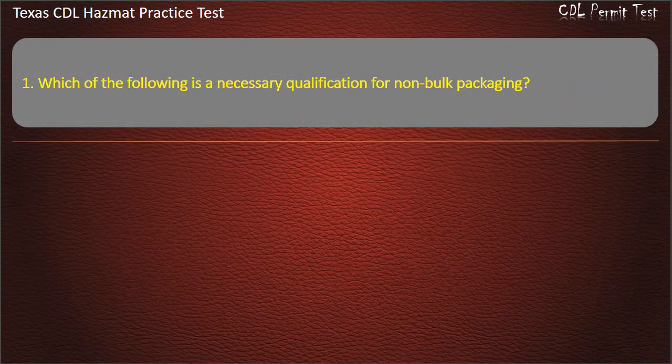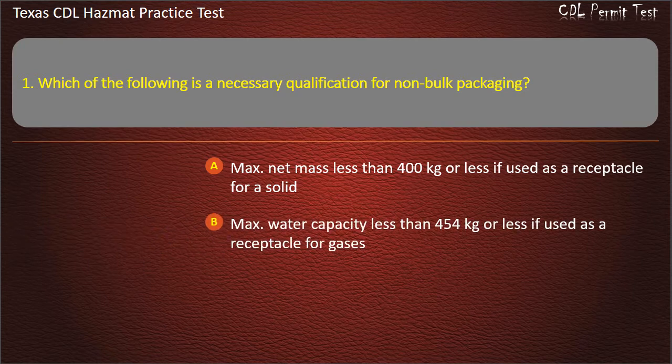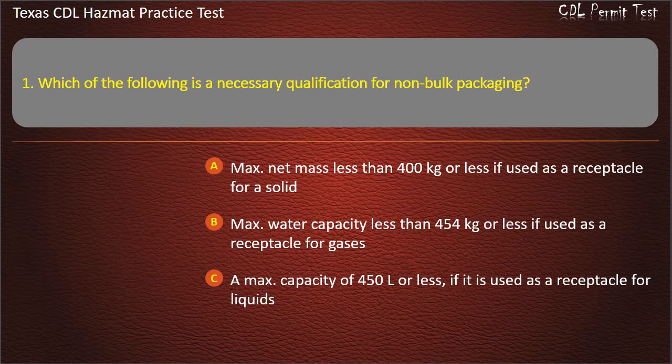Question 1: Which of the following is a necessary qualification for non-bulk packaging? Max net mass less than 400 kg or less if used as a receptacle for a solid. Max water capacity less than 454 kg or less if used as a receptacle for gases. Max capacity of 450 liters or less if it is used as a receptacle for liquids. All of the above. Answer: All of the above.